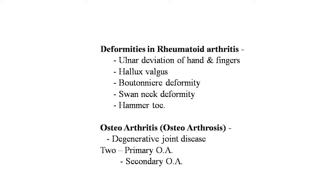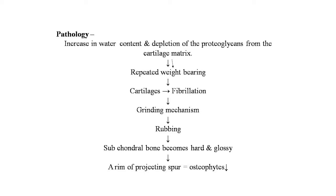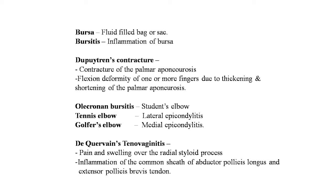Osteoarthritis (osteoarthrosis) is a degenerative joint disease. There are two types: primary and secondary osteoarthritis. Pathology: increased water content and depletion of proteoglycans from cartilage matrix occur, followed by fibrillation from repeated weight bearing. Loss of synovial fluid, subchondral bone becoming hard and glossy, and osteophyte formation at the rim of bone projections characterize osteoarthritis.